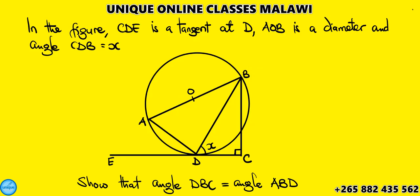The value of angle CDB is x. We are told to show that angle DBC equals angle ABD.